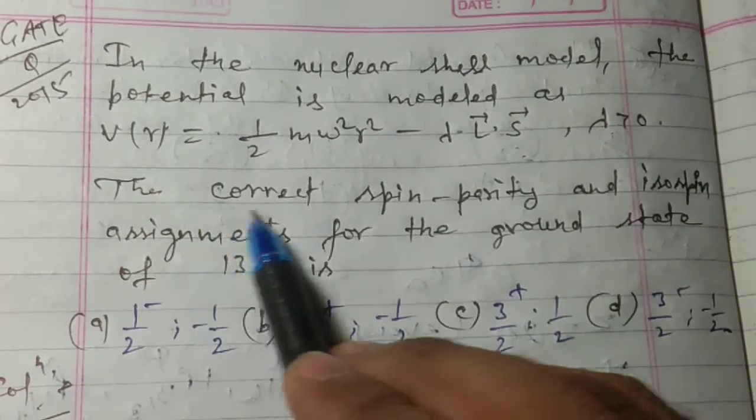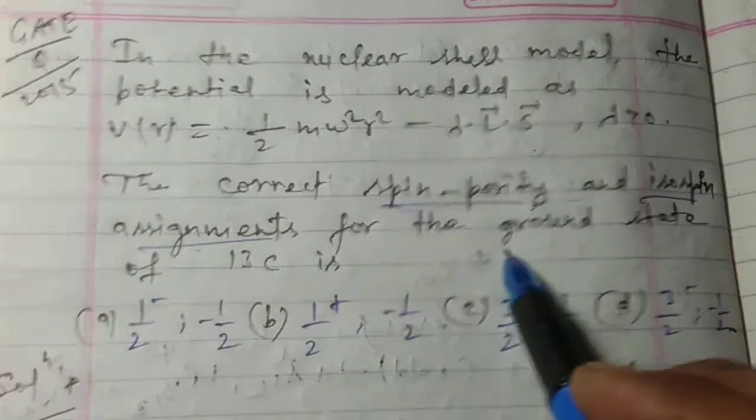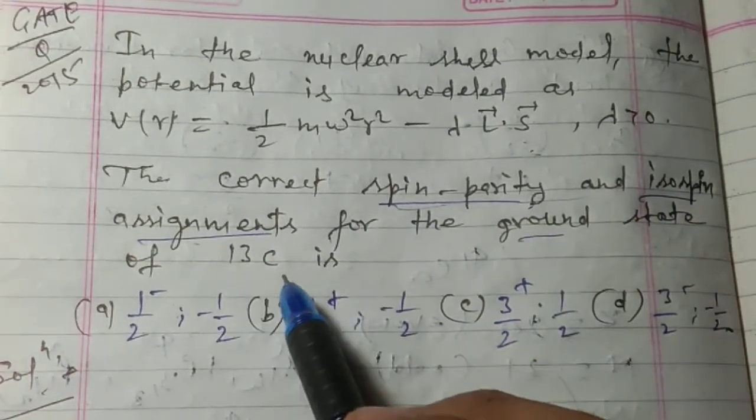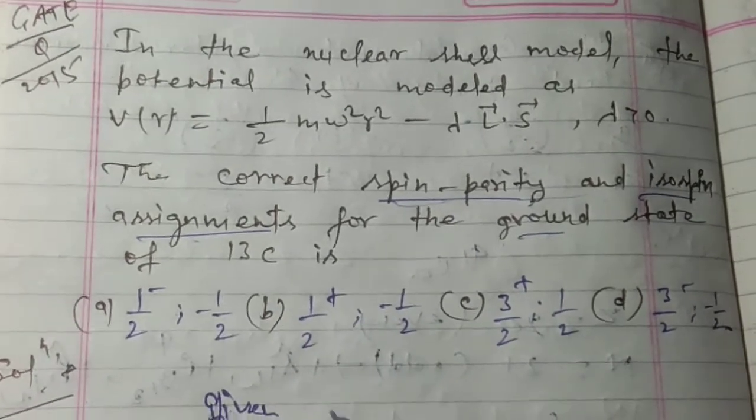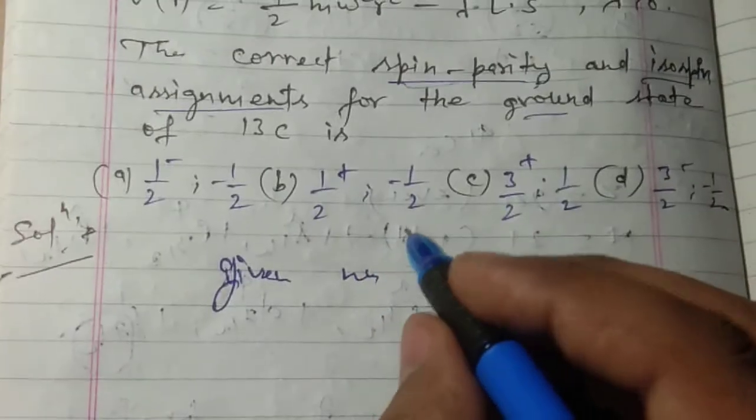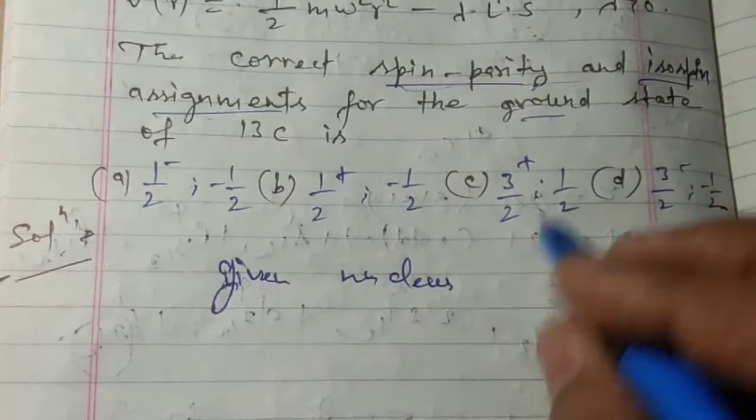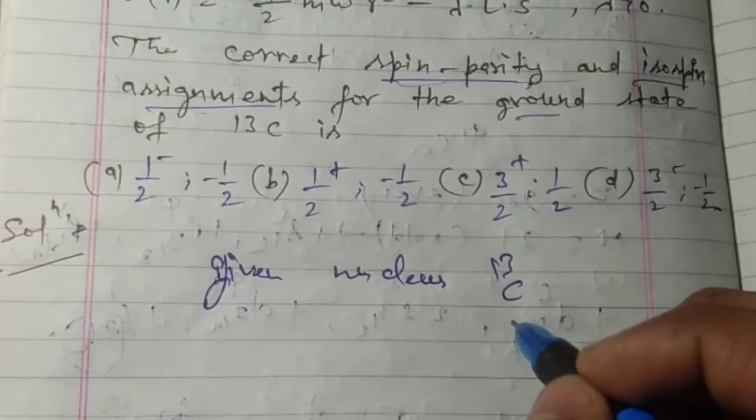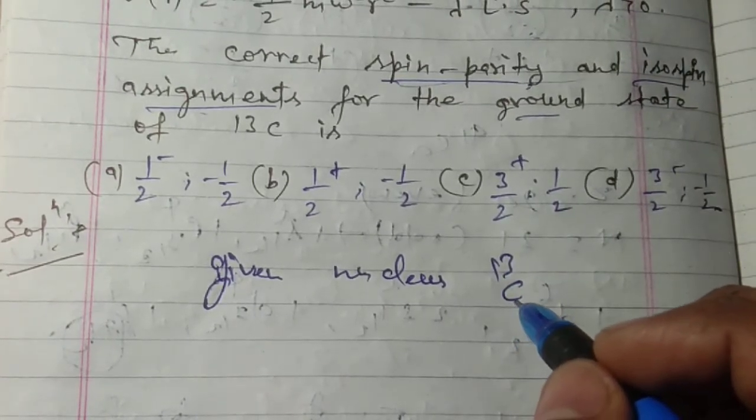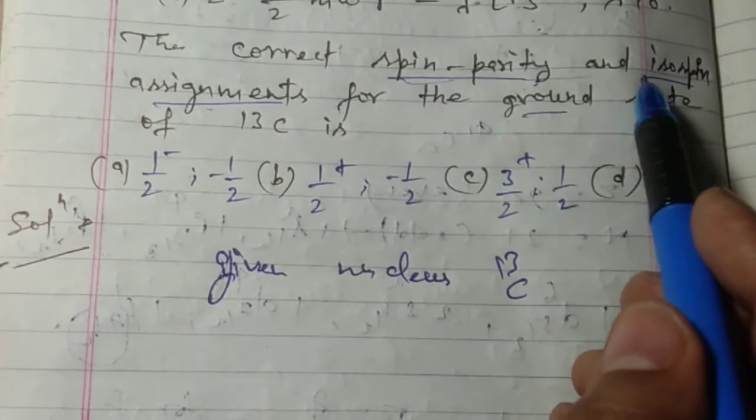The correct spin-parity and isospin assignments for the ground state of ¹³C. Given nucleus is carbon-13, we have to find for this carbon the spin-parity and isospin.